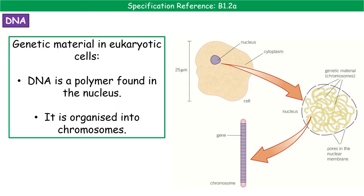What we're going to be looking at today is DNA and protein synthesis. When we're talking about DNA, this is the genetic material that we find in eukaryotic cells. DNA is a polymer and because we're talking eukaryotic cells, it is found in the nucleus. When we consider how that DNA is organized in the nucleus, we have structures called chromosomes, and those chromosomes are divided up into smaller sections called genes.